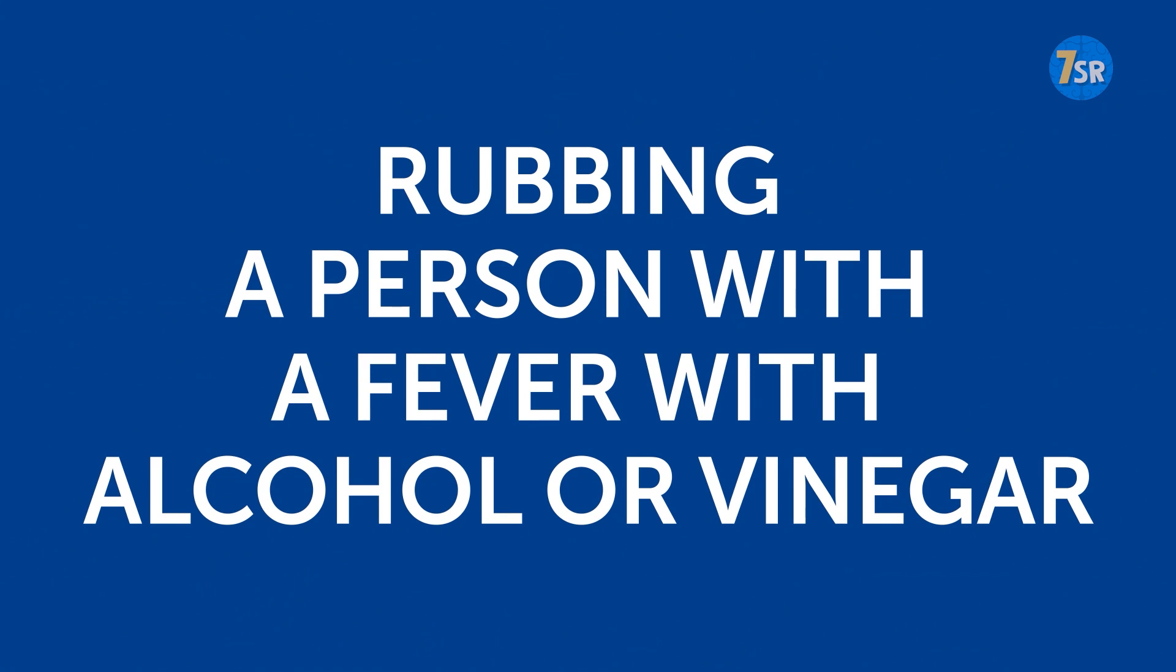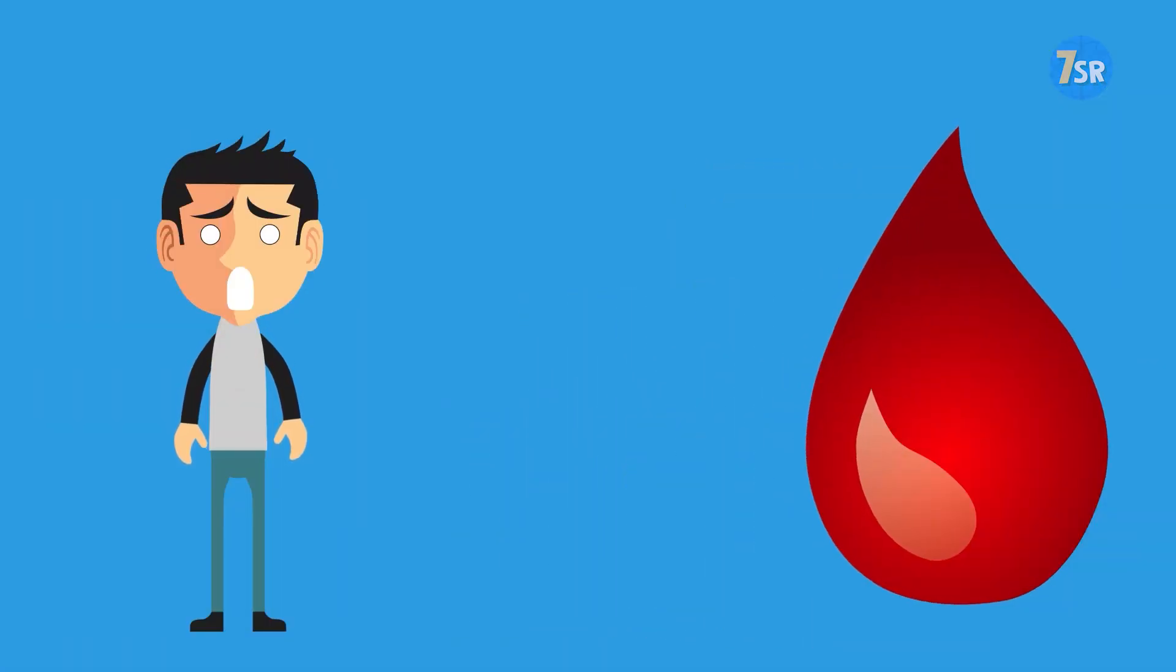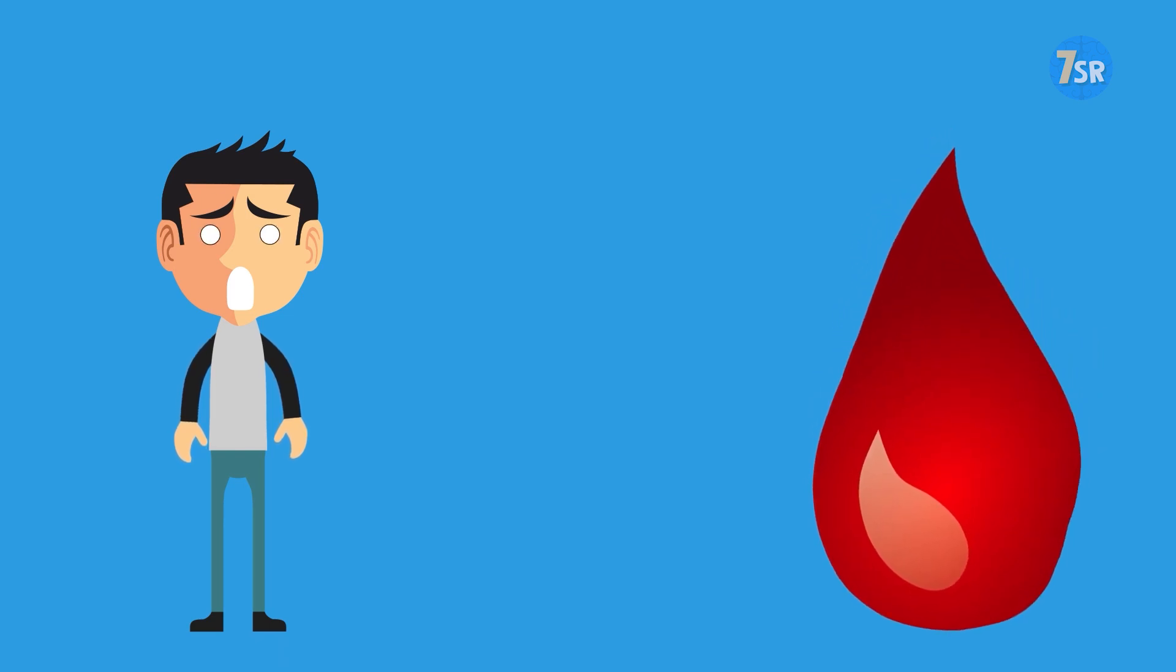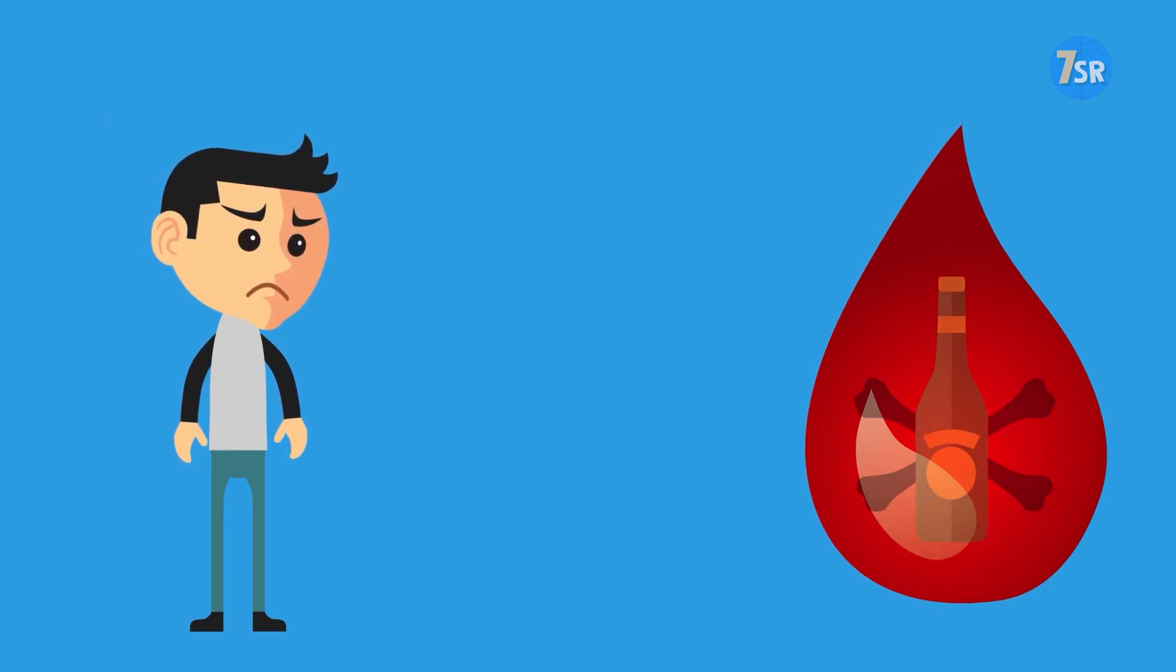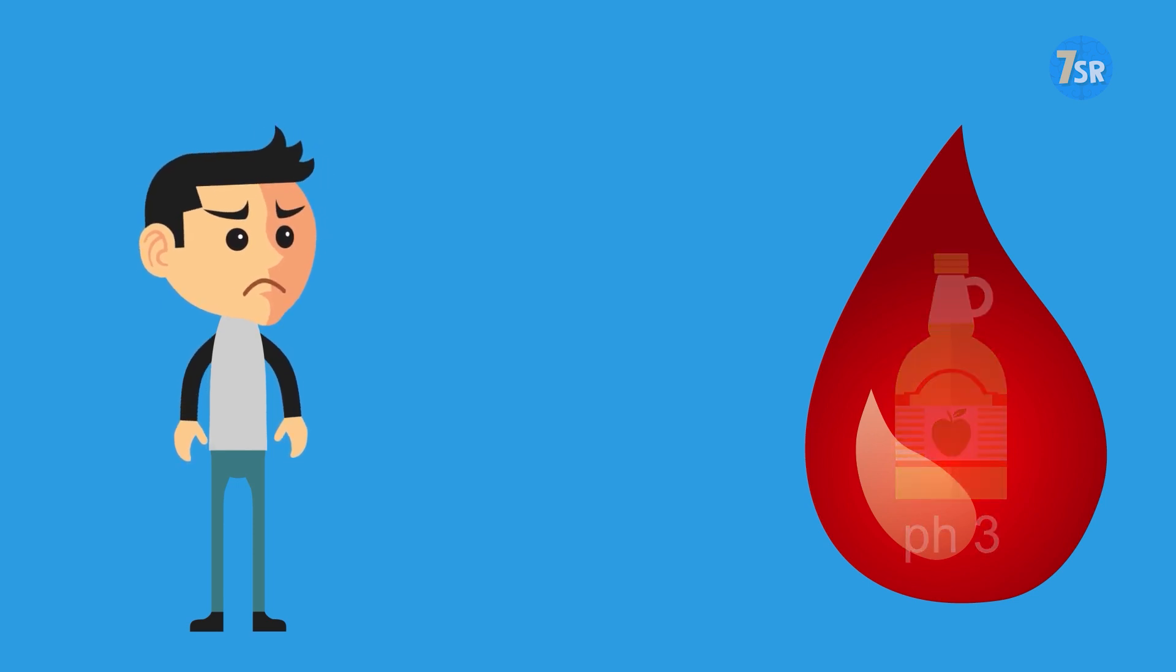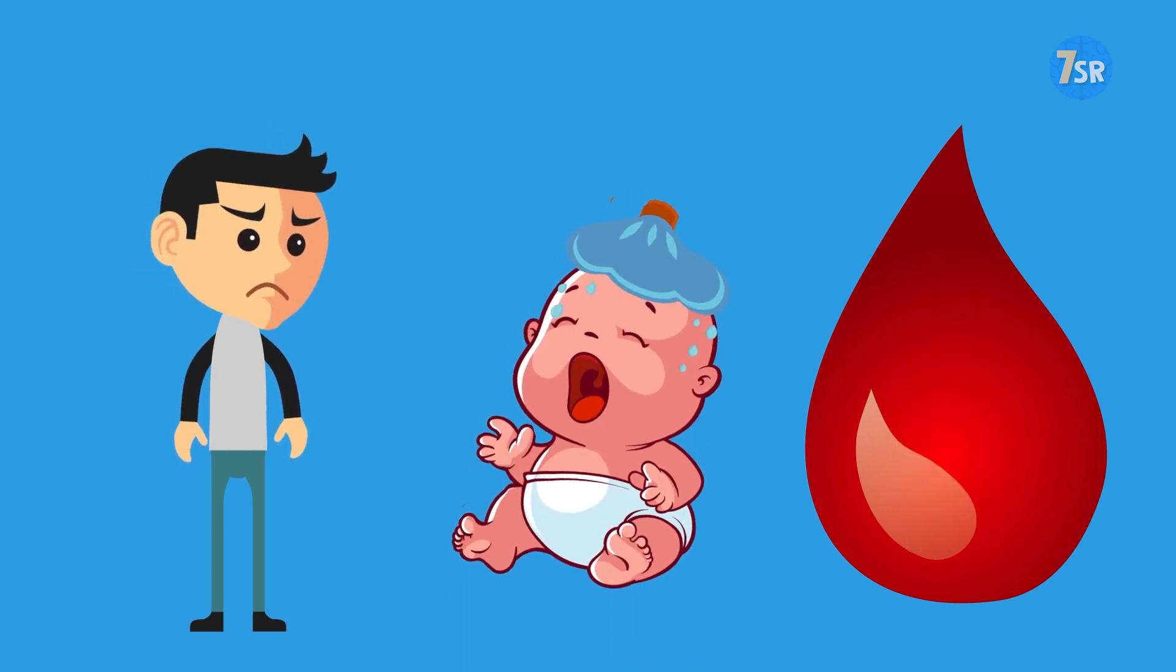Rubbing a person with a fever with alcohol or vinegar. Vinegar and alcohol are absorbed into the blood. Alcohol rubbing may create intoxication, while vinegar will significantly raise acidity, which is especially dangerous for children.